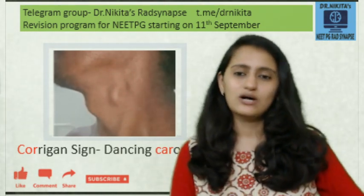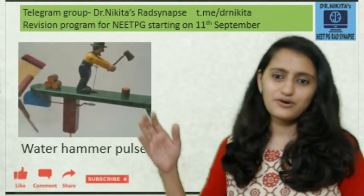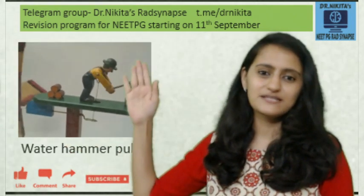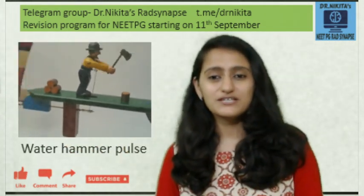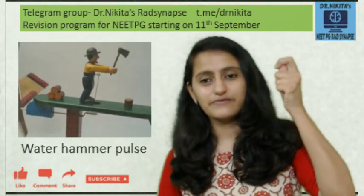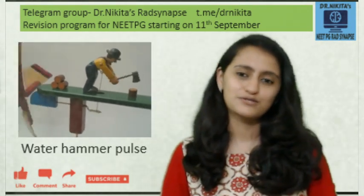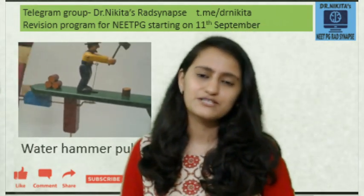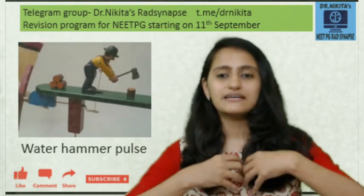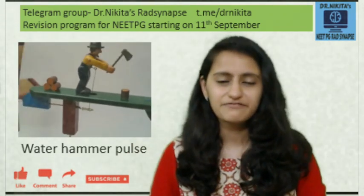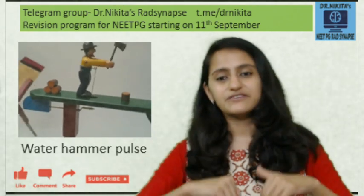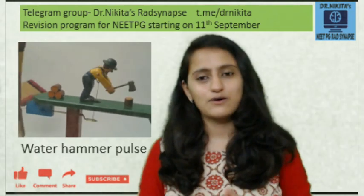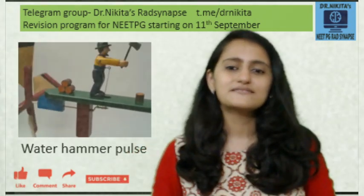Like the water hammer toy, it goes up and comes down — up fast and down fast. This is the water hammer pulse. The concept behind all the signs in aortic regurgitation is the increased stroke volume coming from the left ventricle, and because of regurgitation it goes back into the left ventricle — so it rises high and comes back very soon. That is the basis of all the signs.